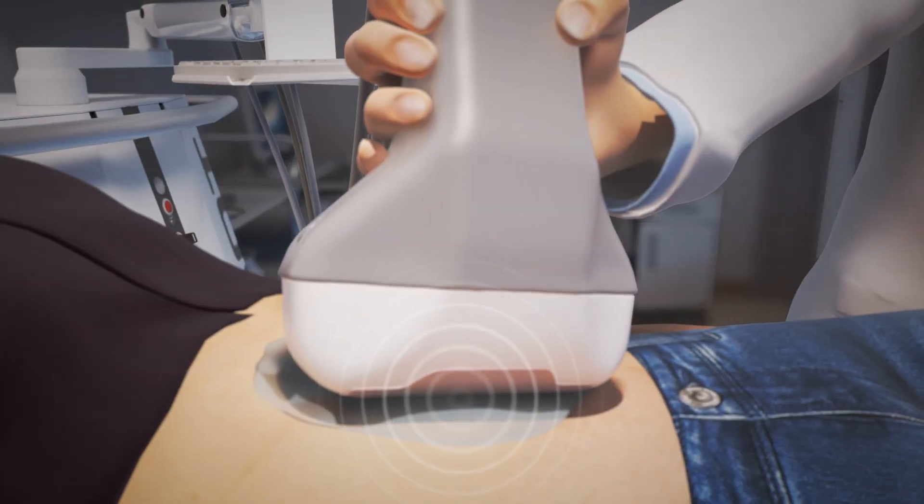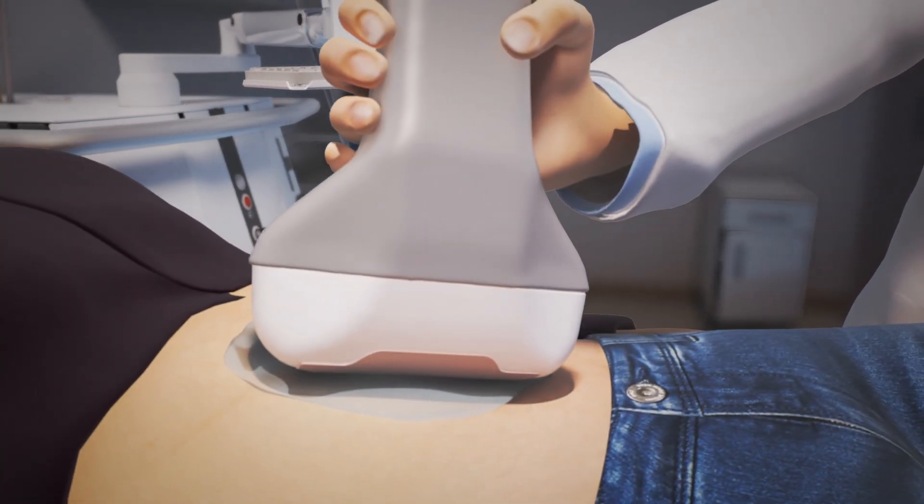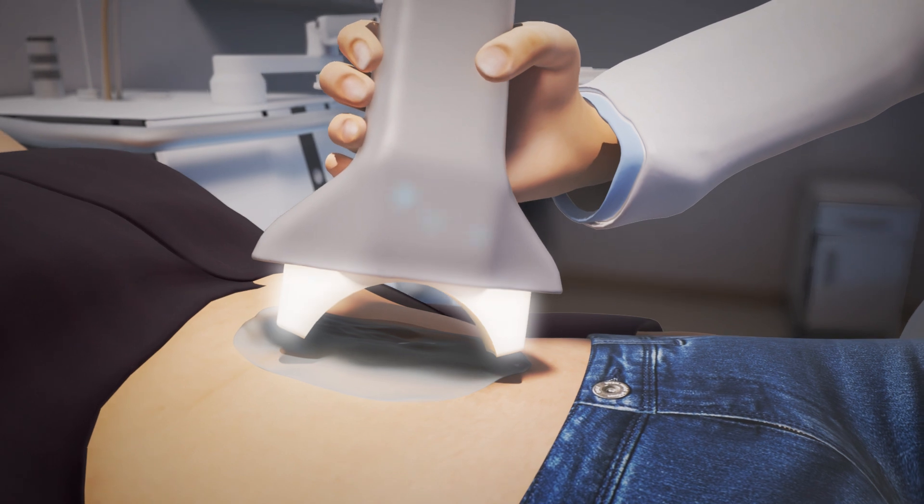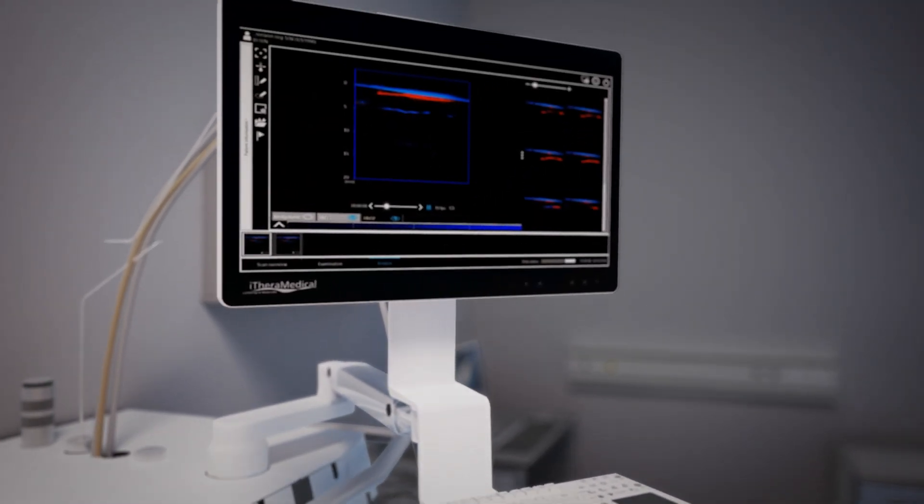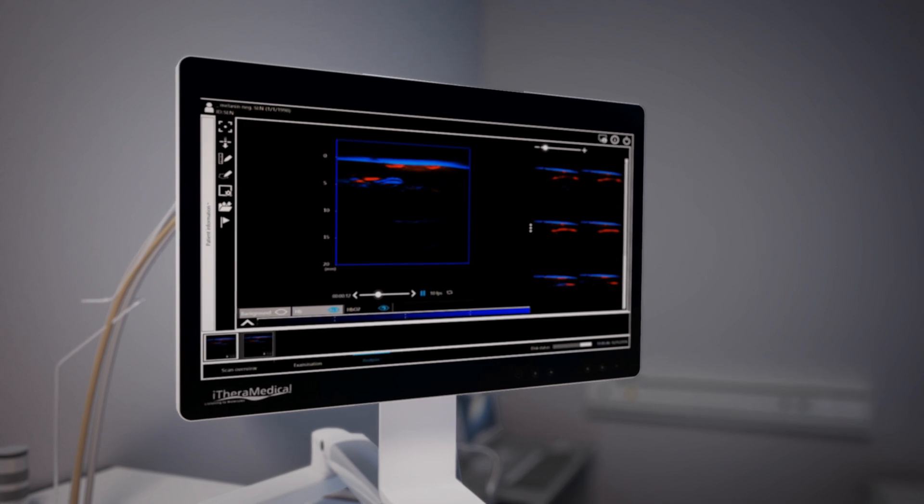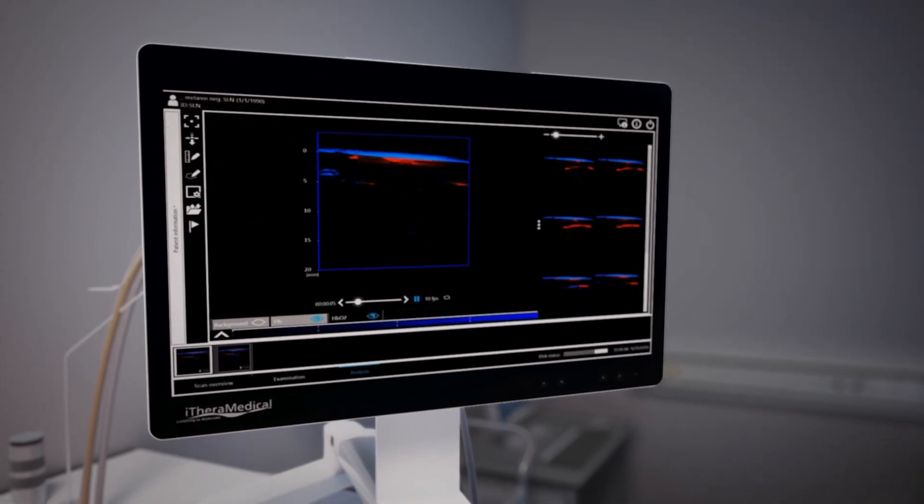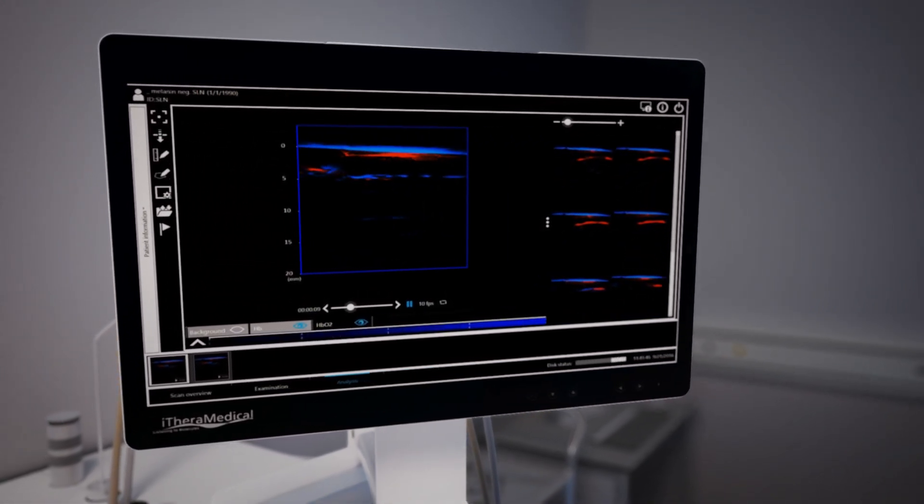The ultrasound signals propagate spherically through the tissue and are detected by a tomographic array. Using advanced algorithms, ultrasound signals are reconstructed to form images and spectrally unmixed to visualize different chromophores.